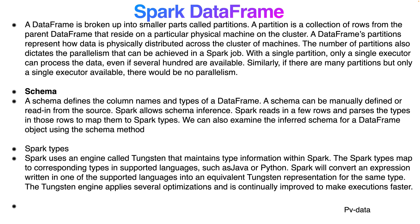A schema defines the column names and types of a DataFrame. A schema can be manually defined or read from the source. Spark can infer the schema by reading a few rows, detecting types, and mapping them to Spark types automatically. You can also examine the inferred schema for a DataFrame using the schema method.